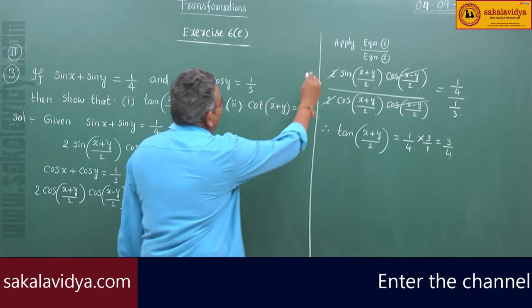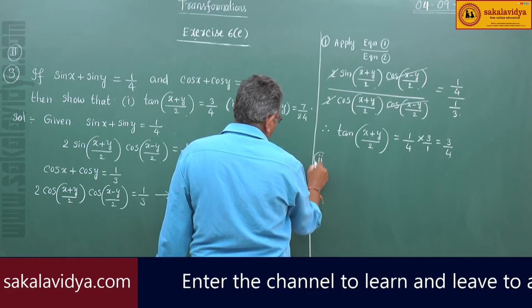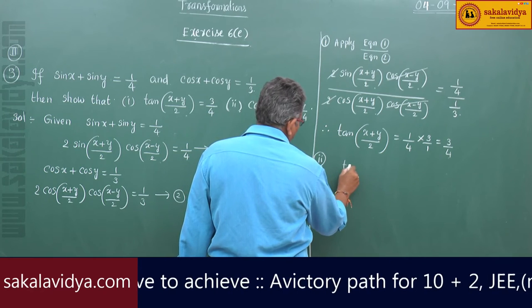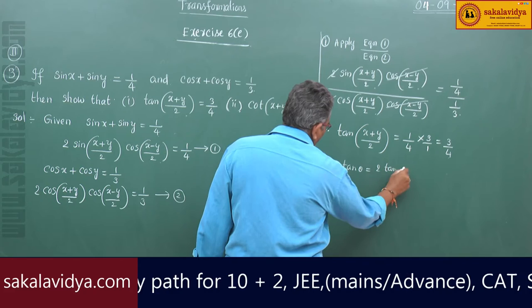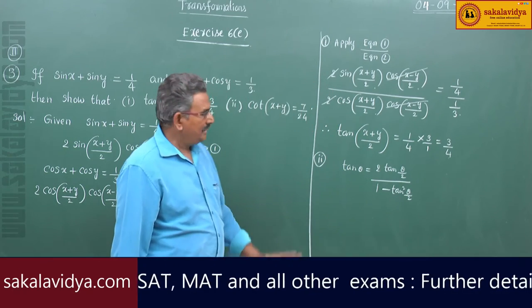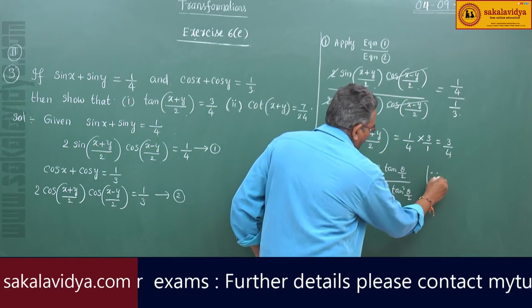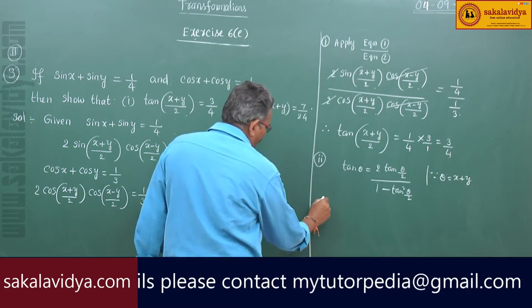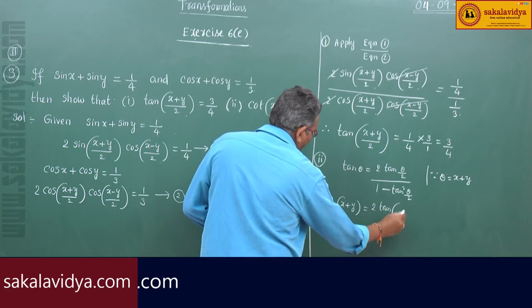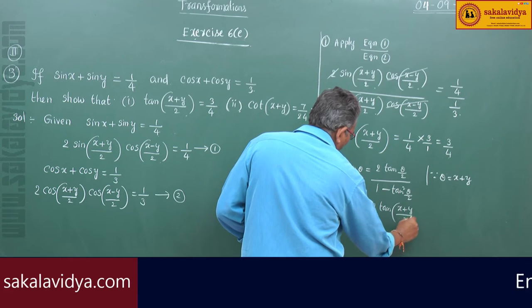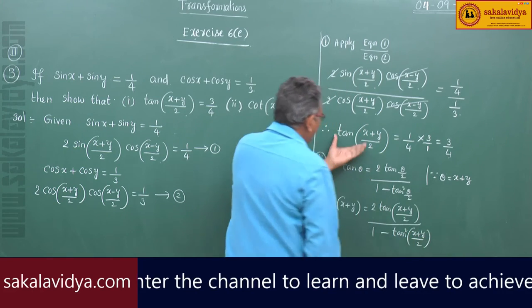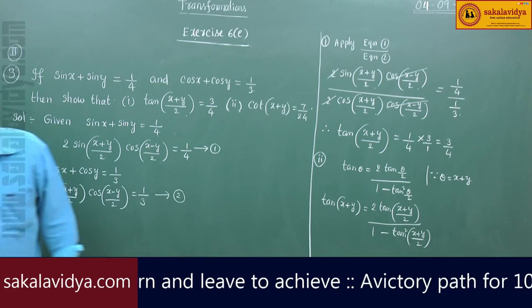For the second part, we use the double angle formula: tan θ equals 2 tan(θ/2) divided by 1 minus tan²(θ/2). In place of θ, replace with x plus y. So tan(x+y) equals 2 tan((x+y)/2) divided by 1 minus tan²((x+y)/2). We know tan((x+y)/2) equals 3 by 4, so let us substitute.